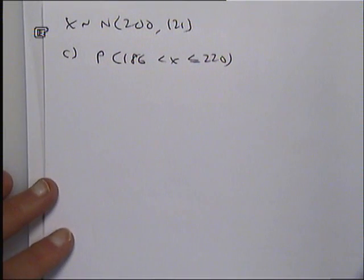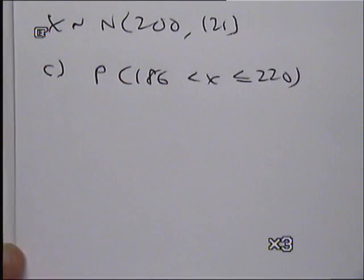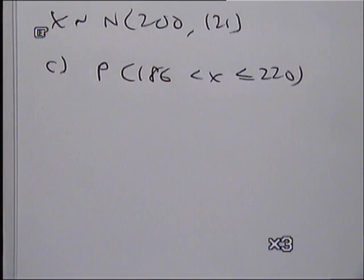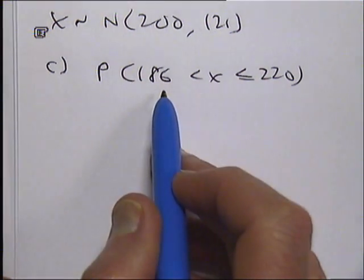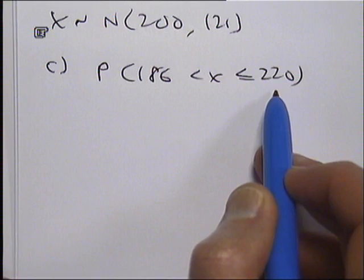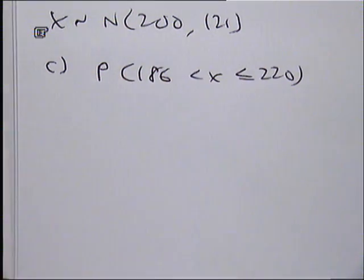Continuing the example from last time, we've got X follows a normal distribution with a mean of 200, a variance of 121. Part C is asking for the probability that X lies between 186 and 220. Can actually include the 220, can't include the 186.